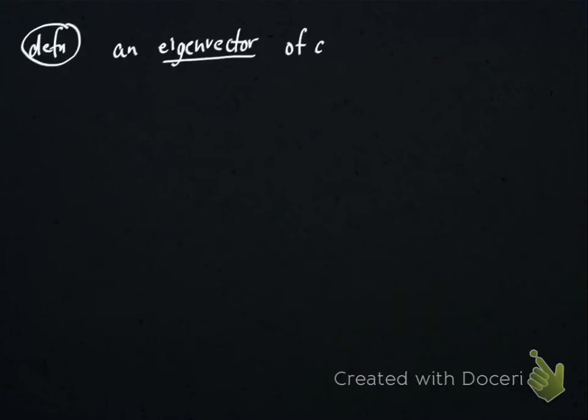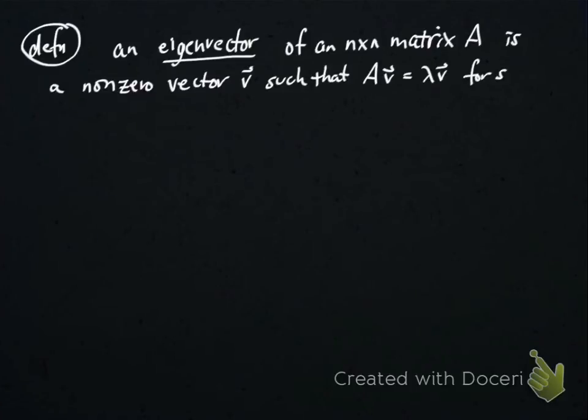So let's first go over the definition of eigenvector and eigenvalue. An eigenvector of an n by n matrix A is a non-zero vector V such that A times V equals lambda V for some scalar lambda. So this means that V is a vector such that A times V is just a scalar multiple of V.